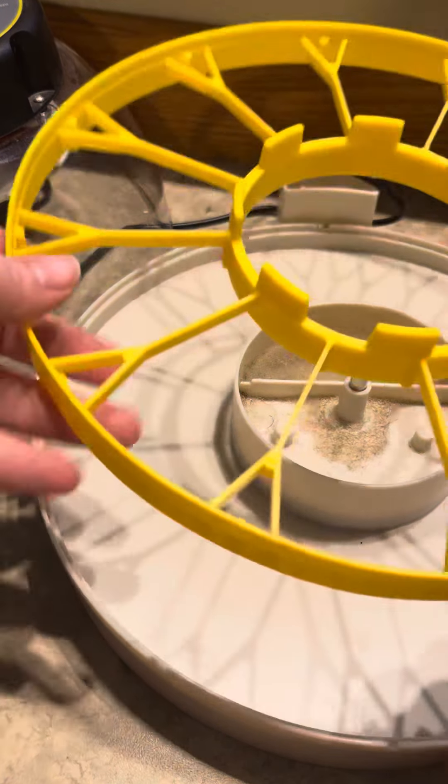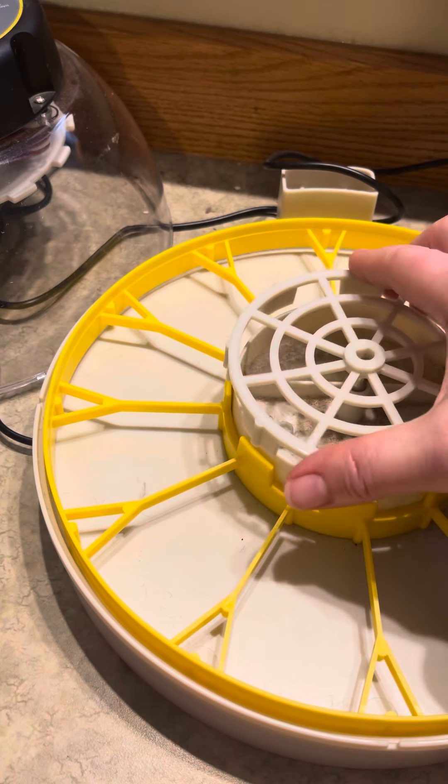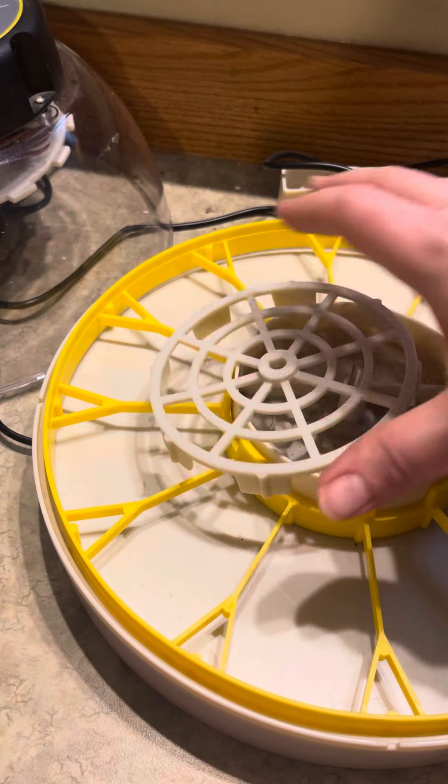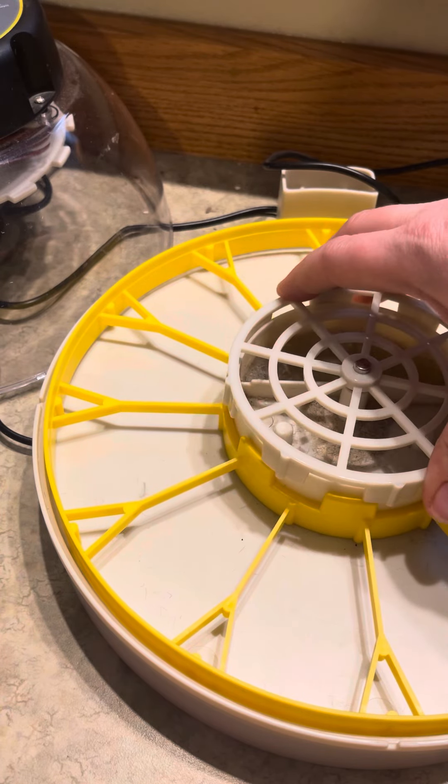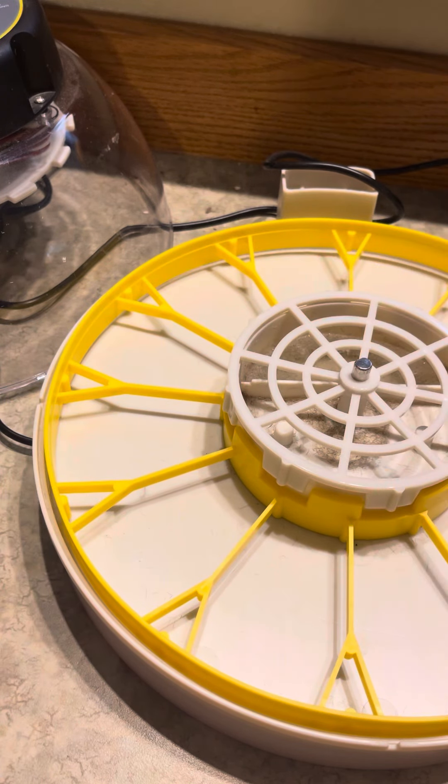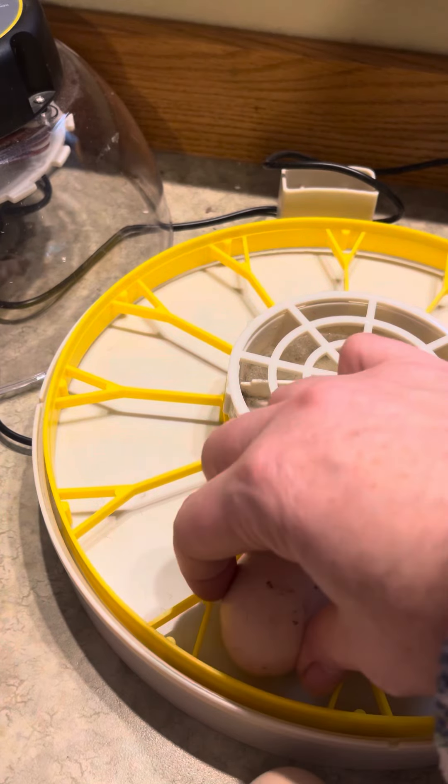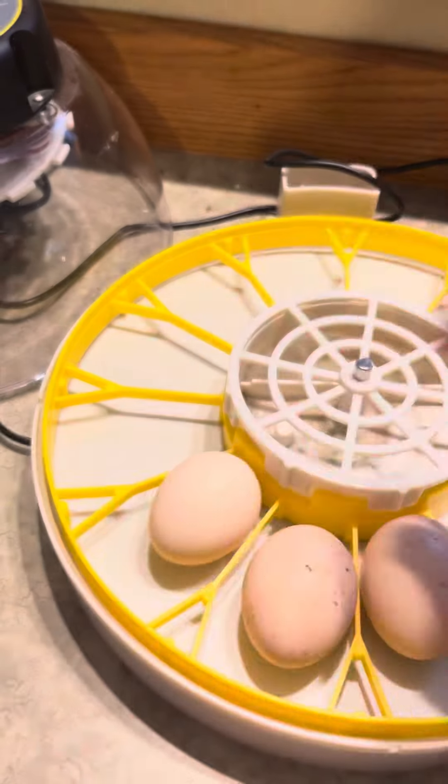You want to make sure that your egg turner is in and the cap is on the water reservoir. This is important because when the chicks hatch, you don't want them to fall in and drown. Make sure that cap is on, then put your eggs in just like so.